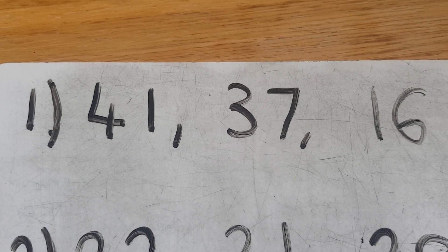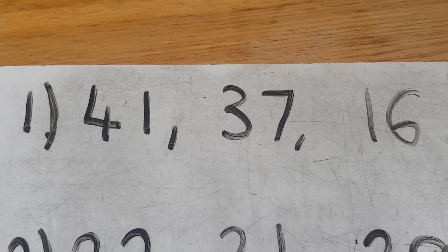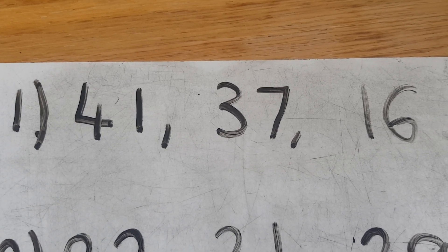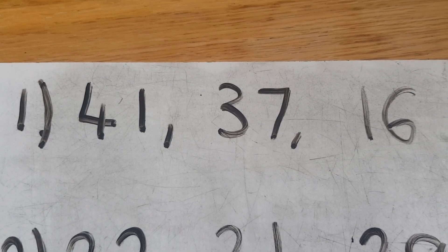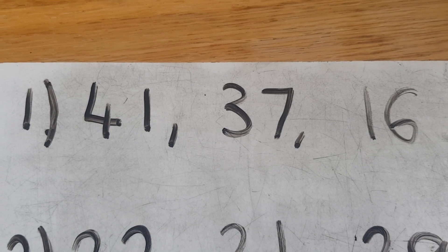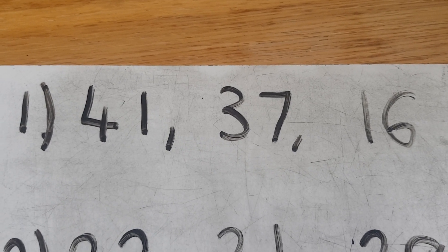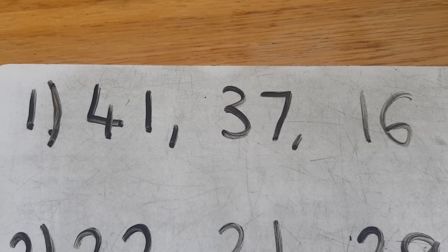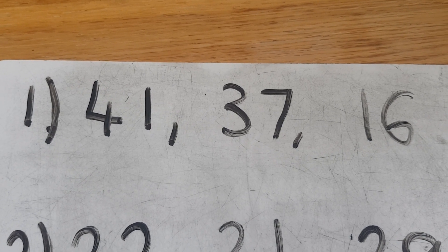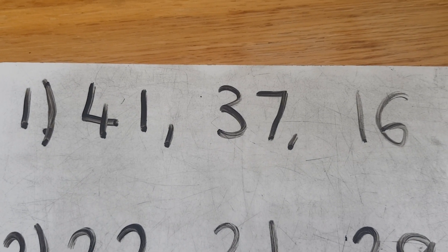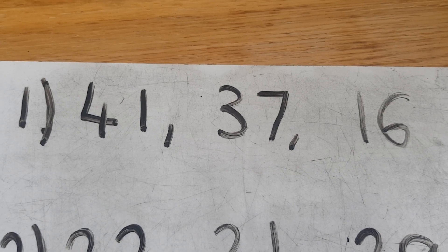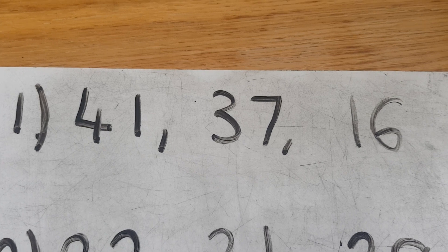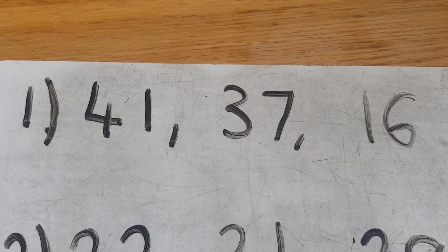Hello boys and girls. Today you are either going to be asked to look for the biggest number out of a group of numbers, or the smallest number out of a group of numbers. There are two ways that we can do this: the first way is by looking at the tens and the ones without using a number square, and the second way is by using a number square. I'm going to show you both ways today and you can choose your favourite.